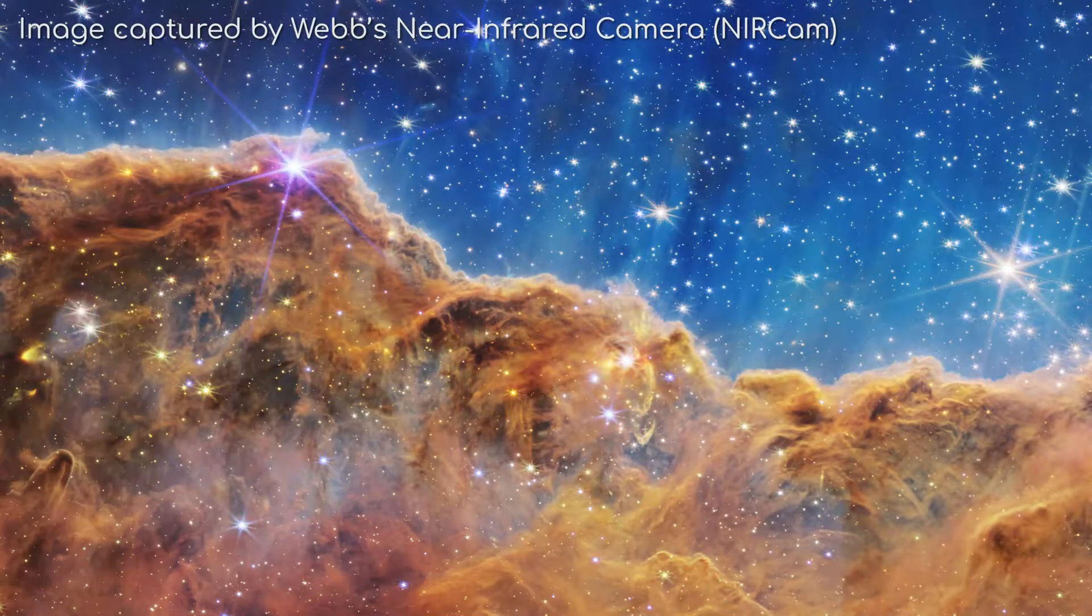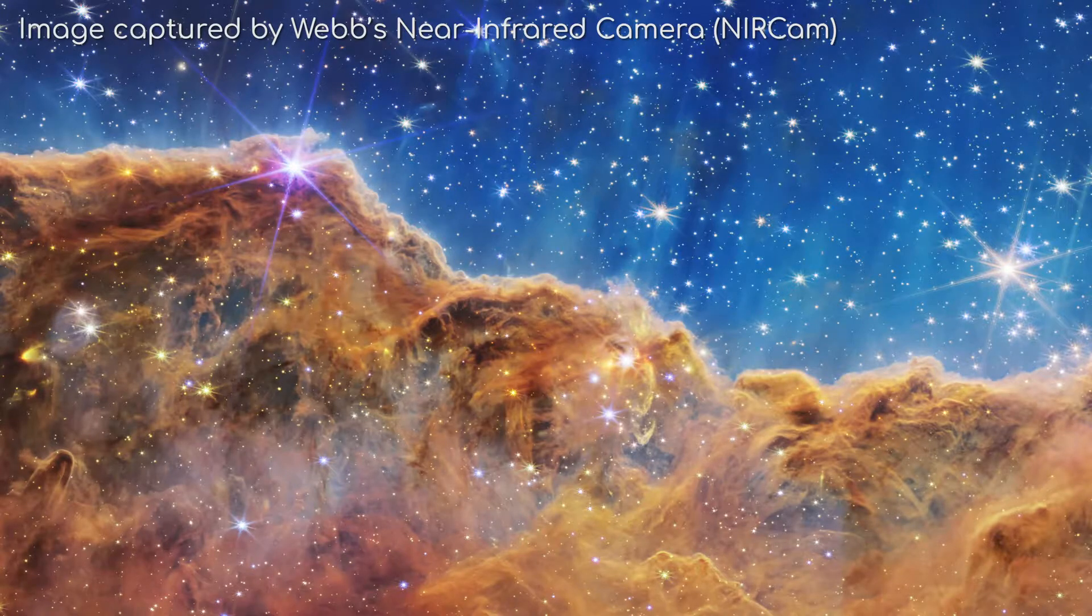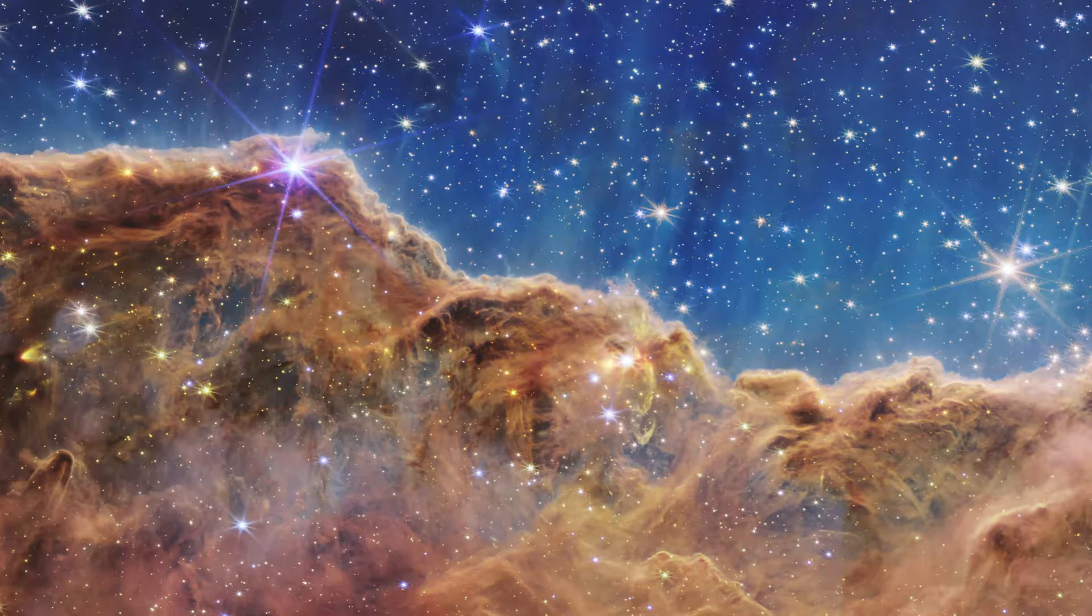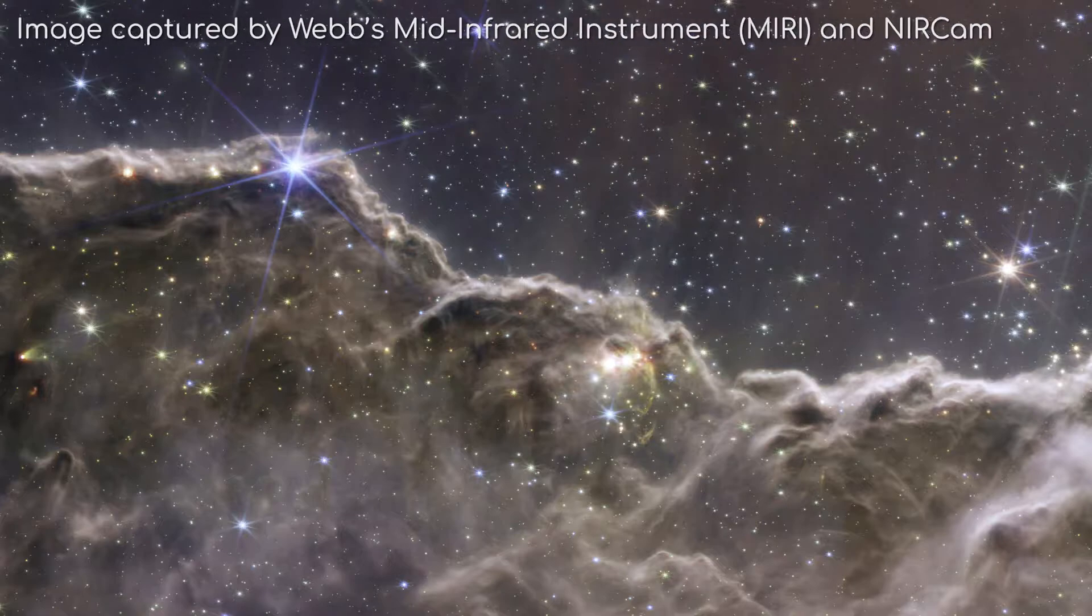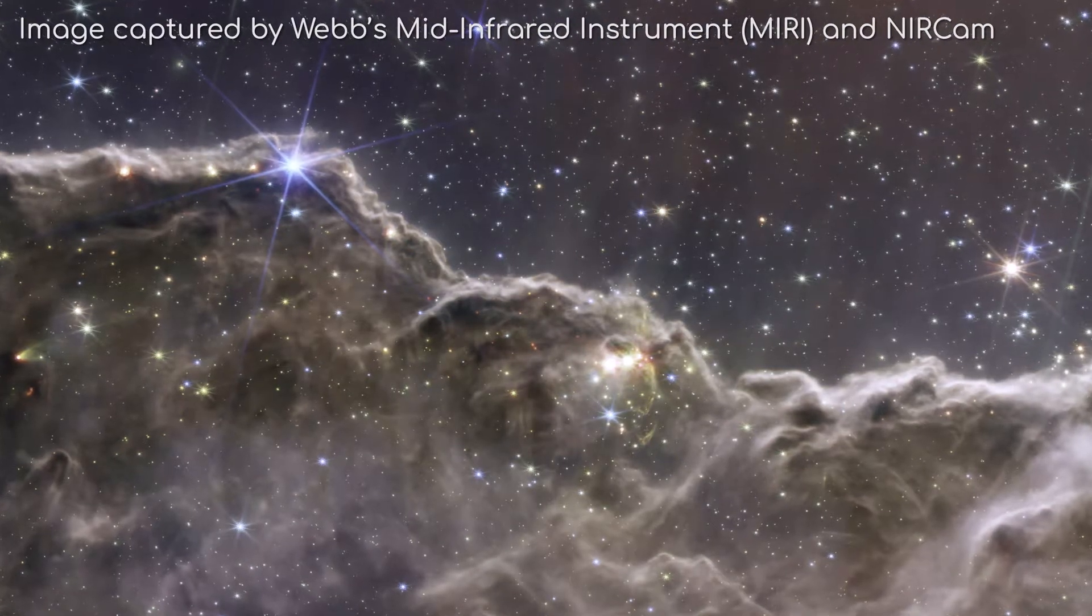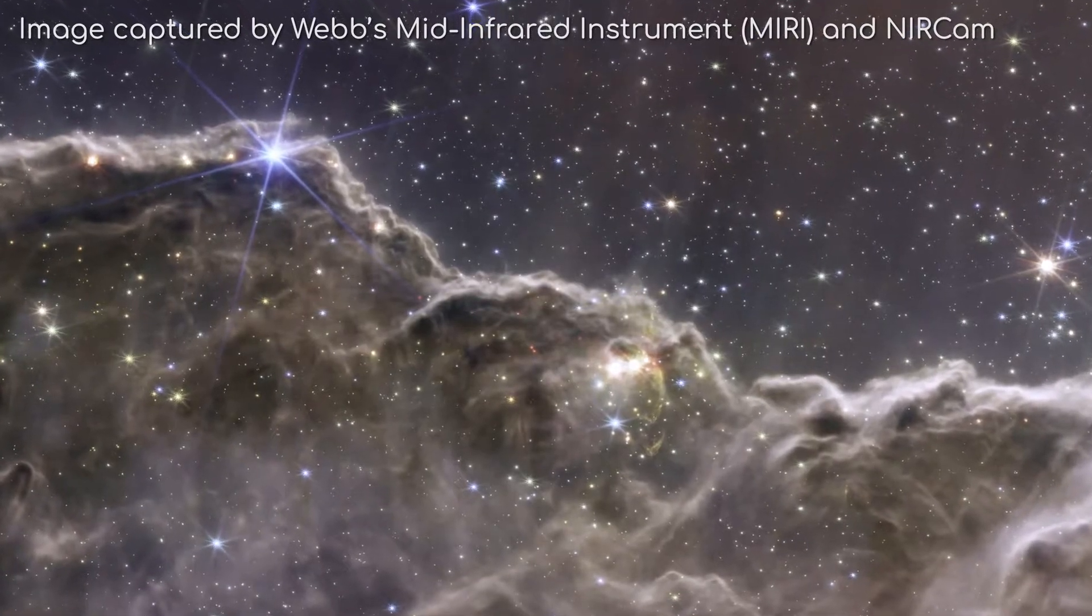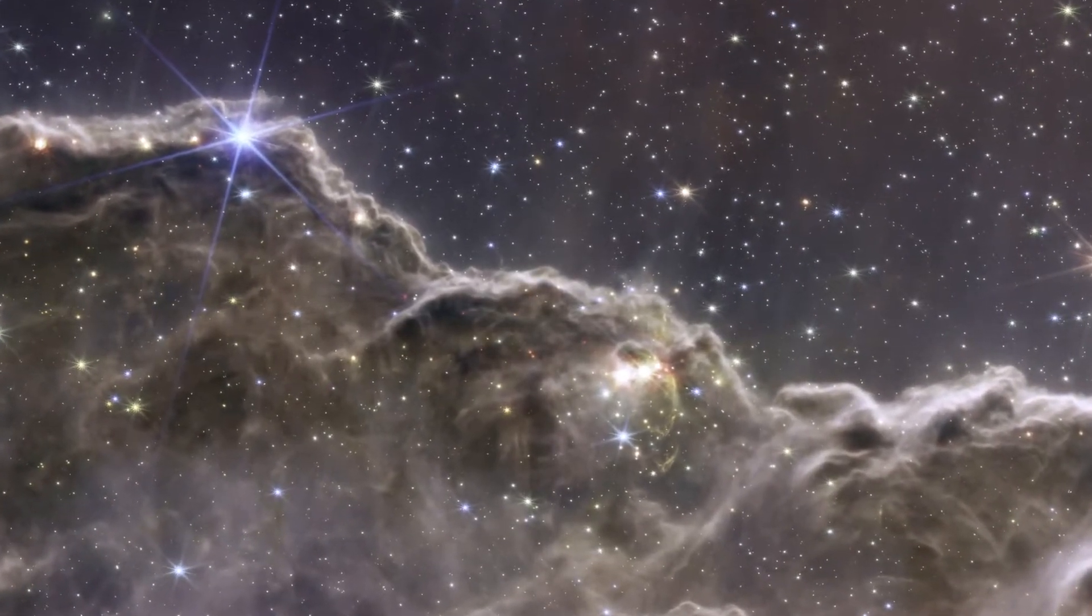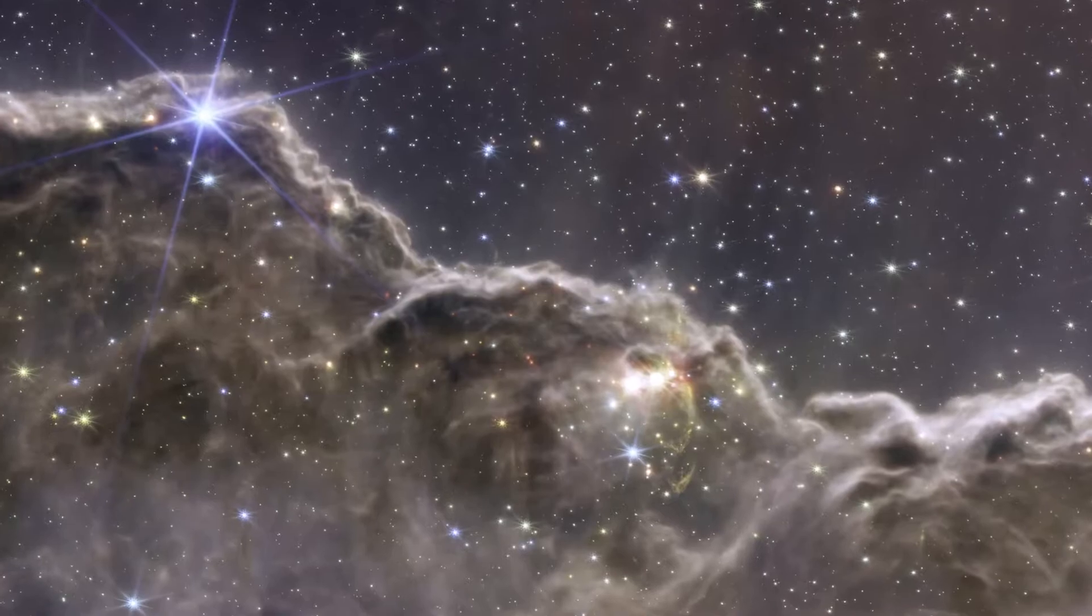Not only does this image provide more detail than Hubble's image, but thanks to James Webb's onboard MIRI, or mid-infrared instrument, we can peel back the layers of dust and see what lies within. See how much clearer the image is. This will provide scientists with data on the formation of stars for a long time yet. So much for the birth of stars.